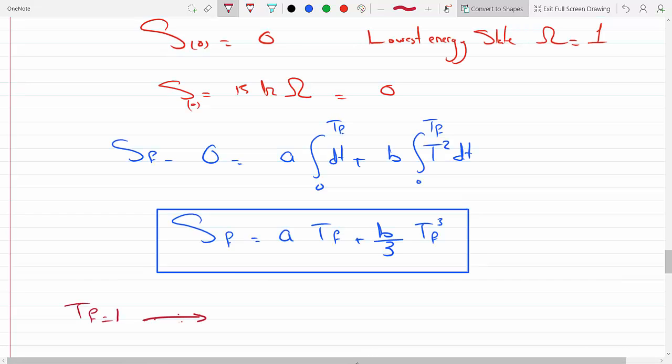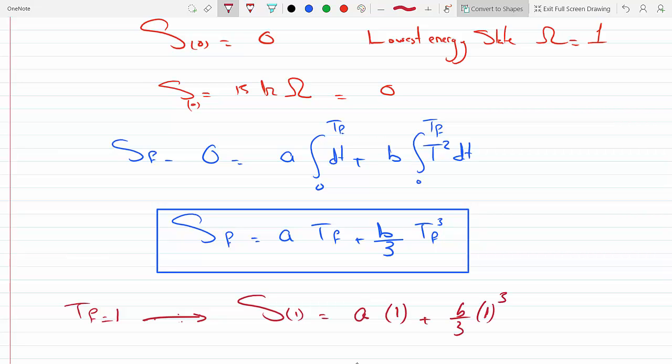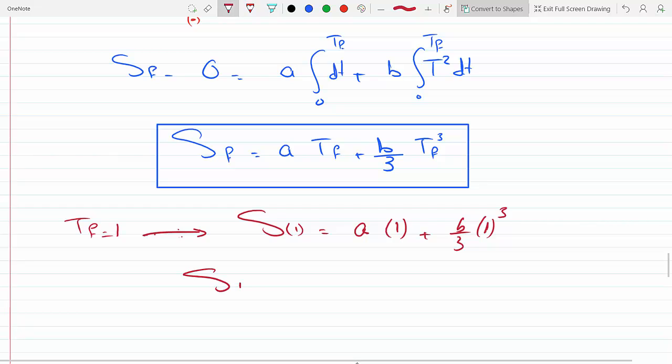We get S of one equals, we know what the constants a and b are, so this would be a times one plus b over three times one cubed.